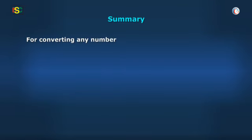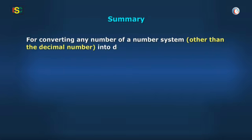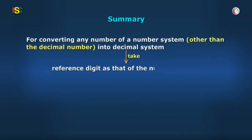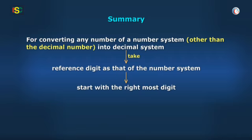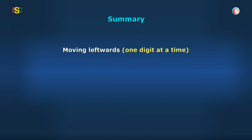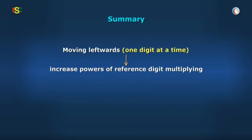For converting any number of a number system other than decimal into decimal number, we will take the reference digit as that of the number system and start with the rightmost digit. Multiply the rightmost digit with the reference number raised to the power 0. Moving leftwards one digit at a time, we will increase the powers of the reference digit, multiplying it every time with the digit.